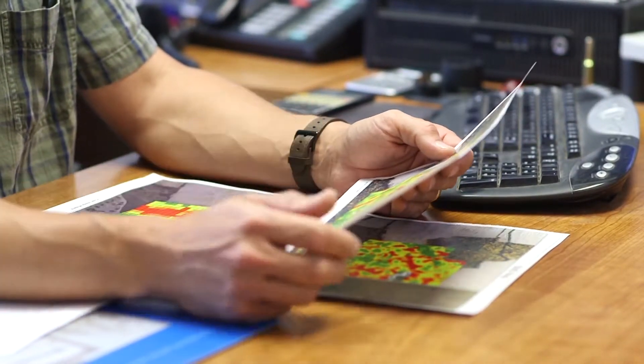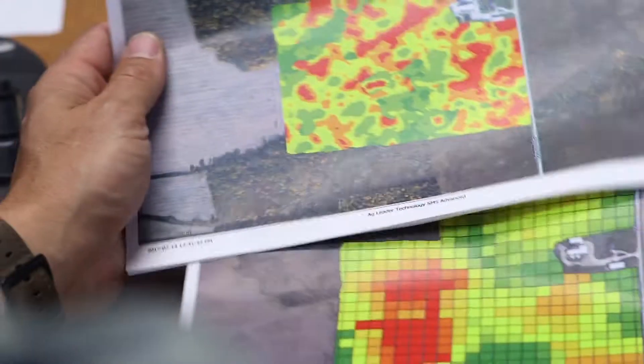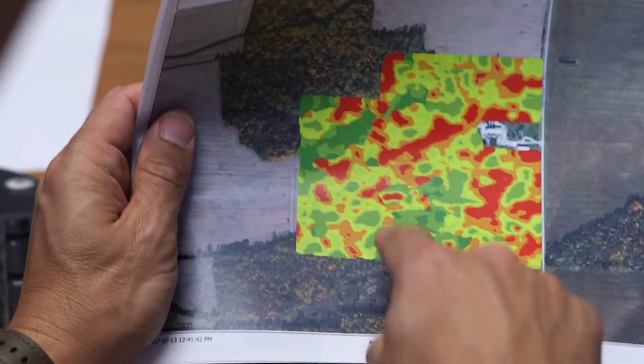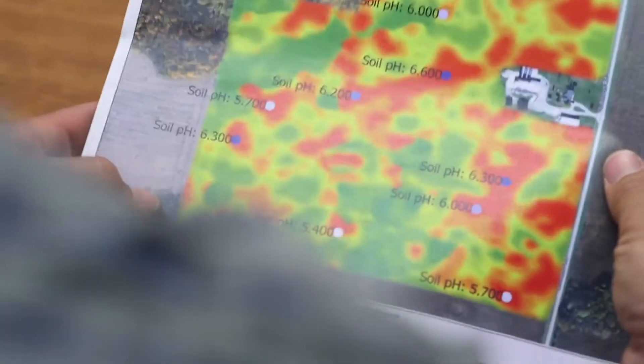When we had soil optics out, I had them try my home farm and when they brought the map back, I compared the map that they gave me to the map that I had originally with our old process and I didn't believe them. I looked at it and said there's just no way that I had the pH issues or the issues with the farm that they were showing in that much detail.